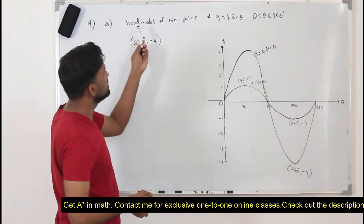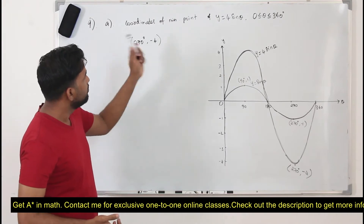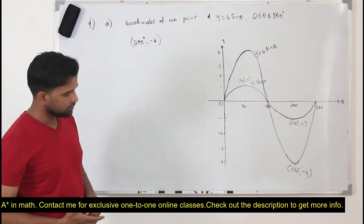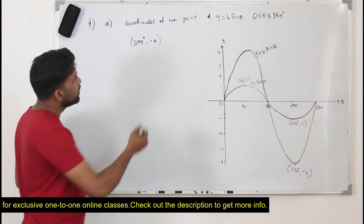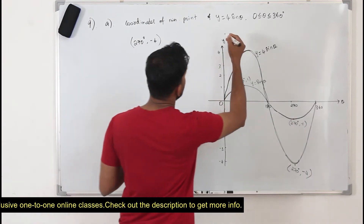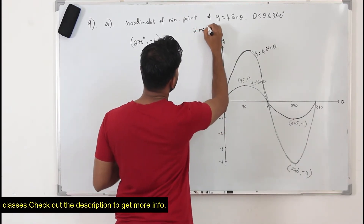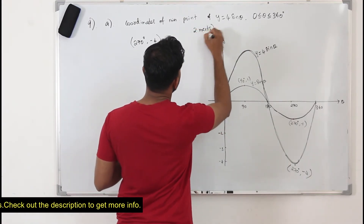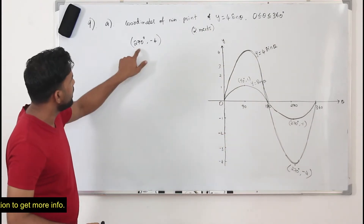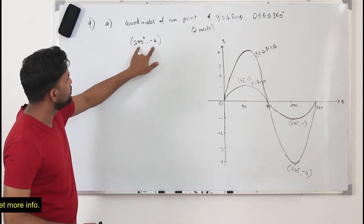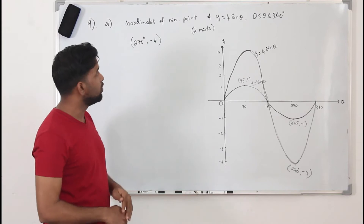This question has 2 marks, so if you plot the curve and find both coordinates of the minimum point correctly, you will get those 2 marks.